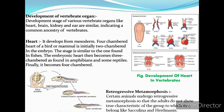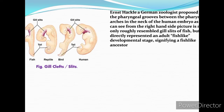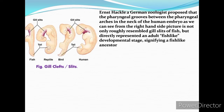Certain animals undergo retrogressive metamorphosis so that the adults do not show true characteristics of the group to which they belong, like Sacculina and Hermit crabs. Moving on to temporary non-functional embryonic structures — embryos often pass through non-functional structures which later disappear according to the needs of species survival, such as gill clefts and tooth buds. Ernest Haeckel, a German zoologist, proposed that the pharyngeal grooves between the pharyngeal arches in the neck of the human embryo roughly resemble gill clefts of fish, signifying a fish-like ancestor.